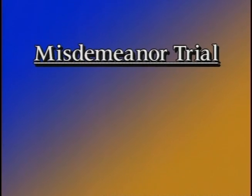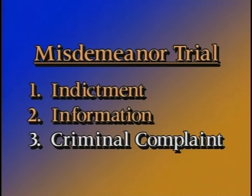Now, what about the trial of a misdemeanor case? A misdemeanor may be tried on an indictment, an information, or a criminal complaint. Unlike petty offenses, a misdemeanor case cannot proceed to trial on a citation or violation notice. The initial appearance is the defendant's first appearance before a judicial officer in the federal court system. It is governed by Rule 5 of the Federal Rules of Criminal Procedure. As a practical matter, the initial appearance of the defendant before a magistrate judge on a misdemeanor or other petty offense charge is often the date the case is actually tried.